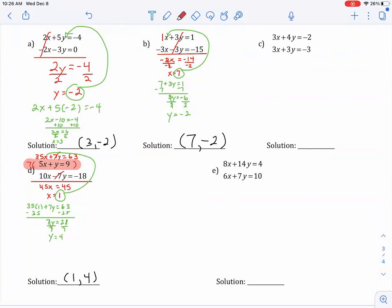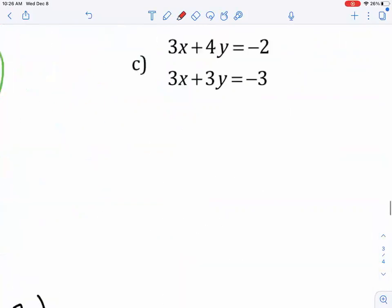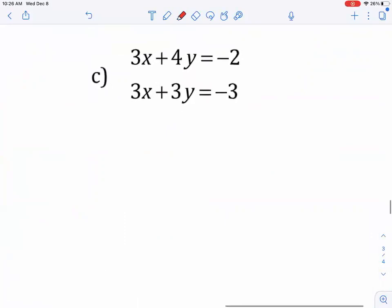All right, so if we wanted to do one more, let's say we wanted to do problem C. If I were to add them down, nothing's going to cancel, because that's going to give me 6X, and that's going to give me 7Y, so neither one of them cancels. So, how could I change this so that something does cancel?